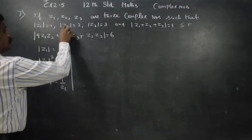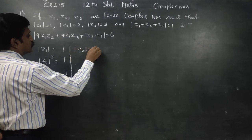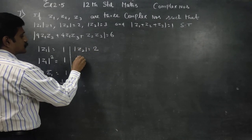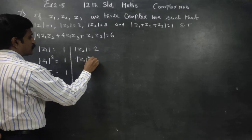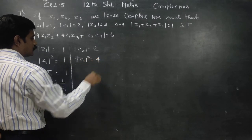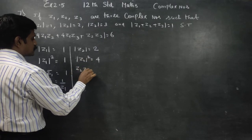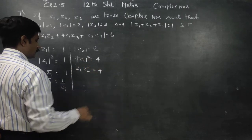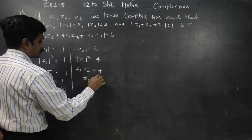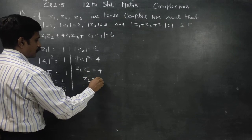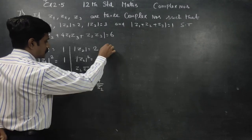Second information: modulus of z2 is equal to 2. Squaring both sides, modulus of z2 whole square is equal to 4. So z2 into z2 conjugate is equal to 4. Therefore, z2 is equal to 4 by z2 conjugate. This is the second result.